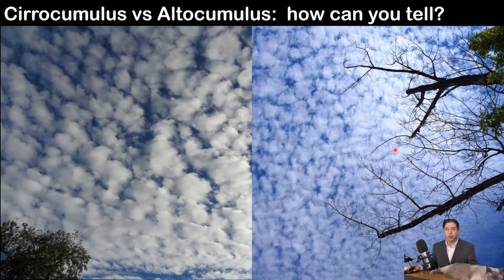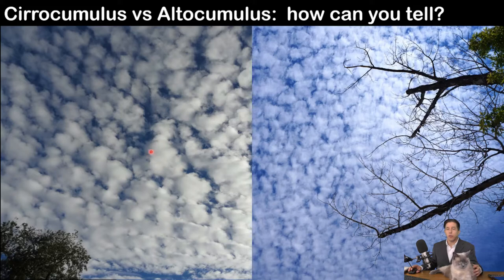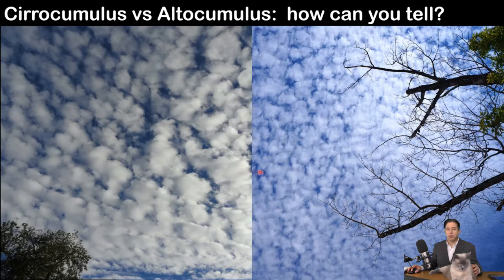So how do you tell cirrocumulus from altocumulus? They're both puffy and kind of small. Altocumulus should be larger, but that's not always true. Because altocumulus are lower and a little bit thicker, they tend to have more of a three-dimensional appearance — if you were an artist painting them, there would be shading. Cirrocumulus often look two-dimensional, just like white spots. In general, use this as a rule: altocumulus will have three-dimensional shading texture; cirrocumulus will just look like flat spots.